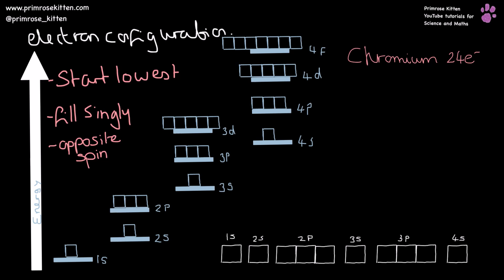So here we have chromium — it has 24 electrons. I'm going to start filling at the bottom, filling singly, and each electron is going to have opposite spins. Filling singly before filling doubly: 1, 2, 3, 4, 5, 6, 7, 8, 9, 10, 11, 12, 13, 14, 15, 16, 17, 18, 19 — then moving to the 4s orbital because it has a lower energy than the 3d orbital, and we need to start with the lowest energy levels and fill upwards.